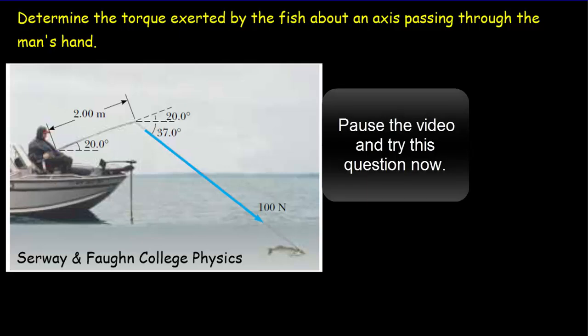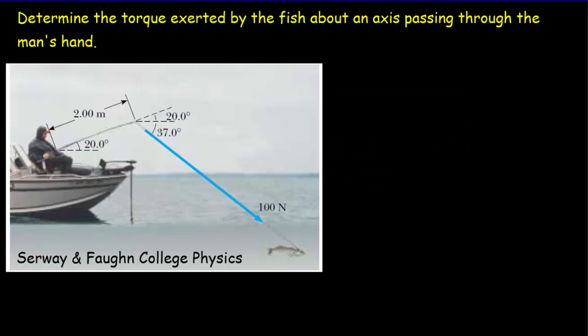Here's a final example taken from Serway and Faughn's College Physics. What I'd like you to do is read it over, try it out for yourself, come back for the answer. Okay, so torque is equal to lever arm distance times force times the sine of the distance between the lever arm and the force.